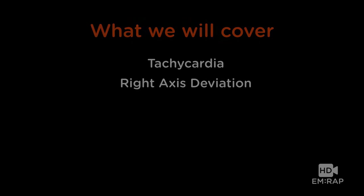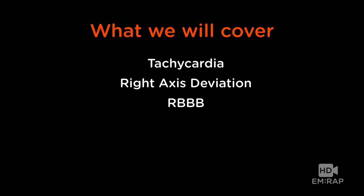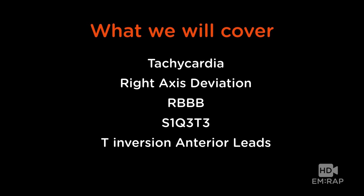We're going to talk about right axis deviation, right bundle branch block — which obviously goes with it — and S1Q3T3, which everybody likes to talk about. We're also going to talk about T-wave inversion in the anterior leads, which is very important because you can get fooled and go down the wrong pathway. And we're going to talk about ST elevation in aVR as a poor prognostic finding.